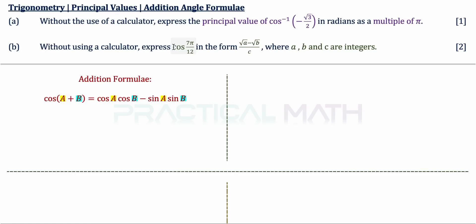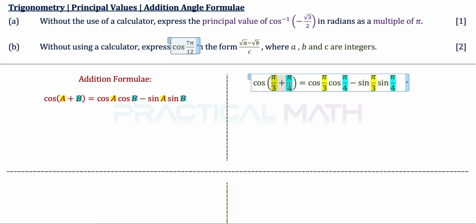The angle 7π/12 can be split into π/3 plus π/4, since 1/3 plus 1/4 equals 7/12. Using π/3 as angle A and π/4 as angle B, we apply the formula: cosine(A + B) equals cos A cos B minus sin A sin B, giving cosine(π/3)·cosine(π/4) minus sine(π/3)·sine(π/4).